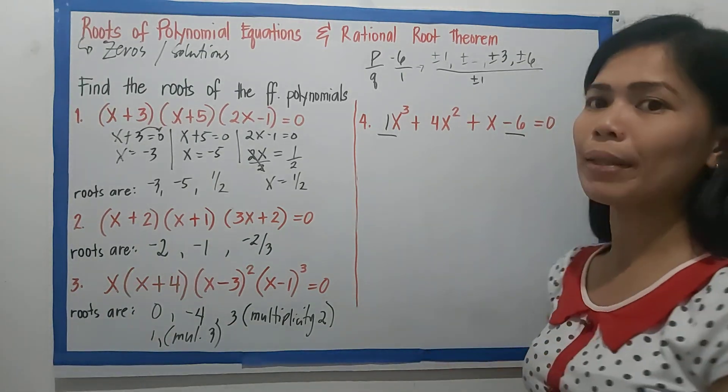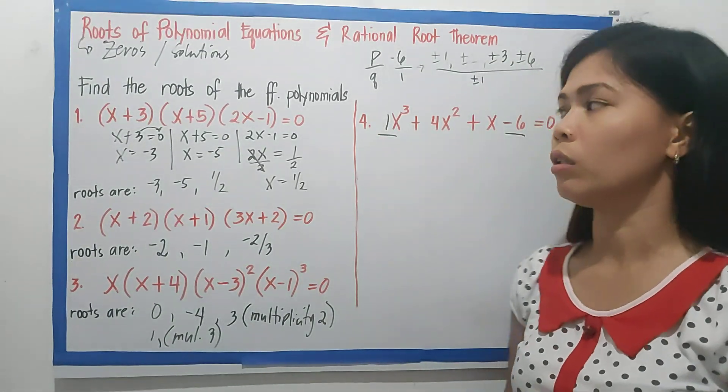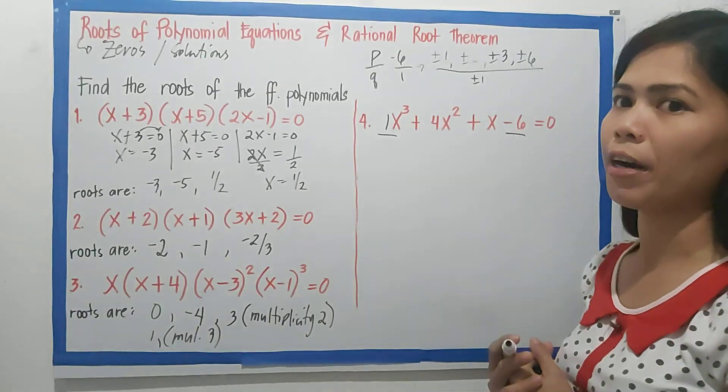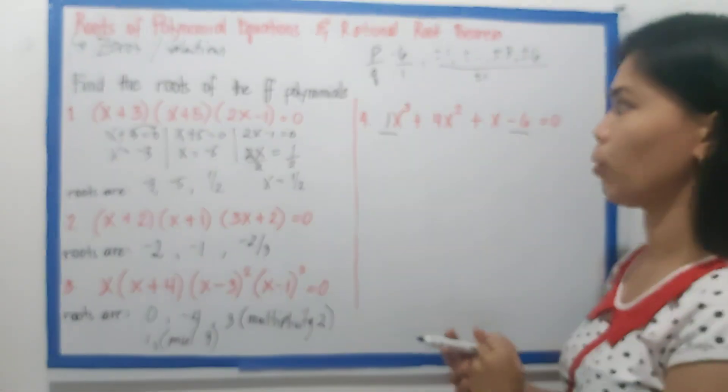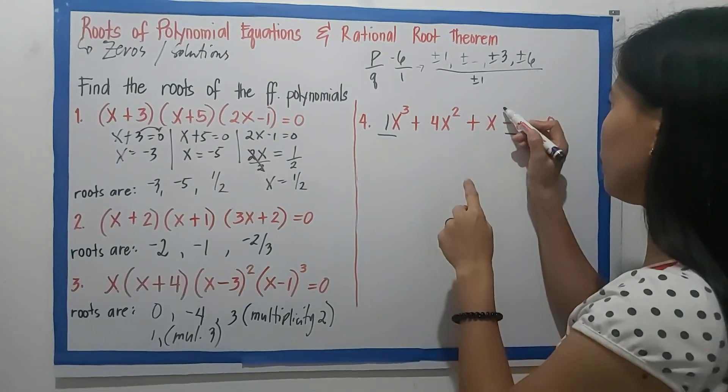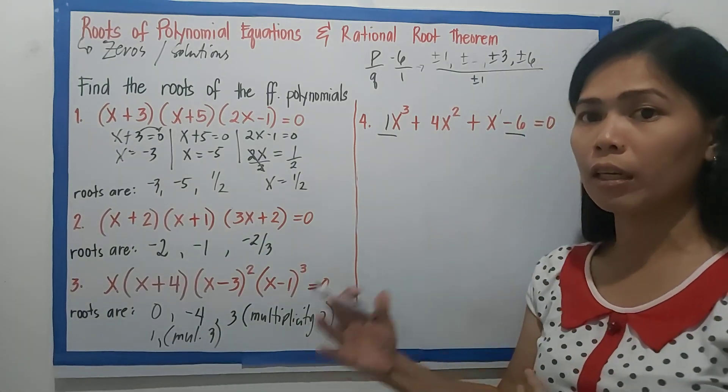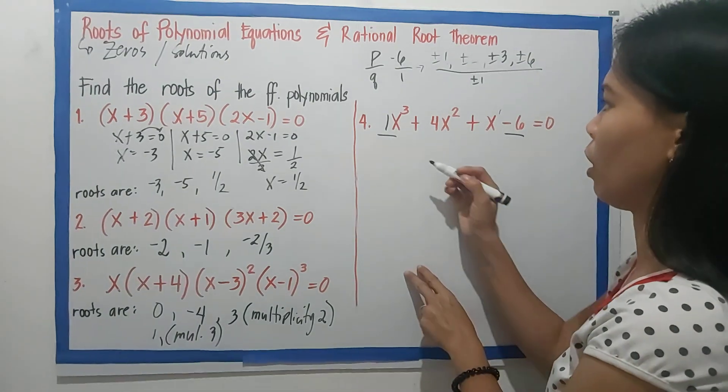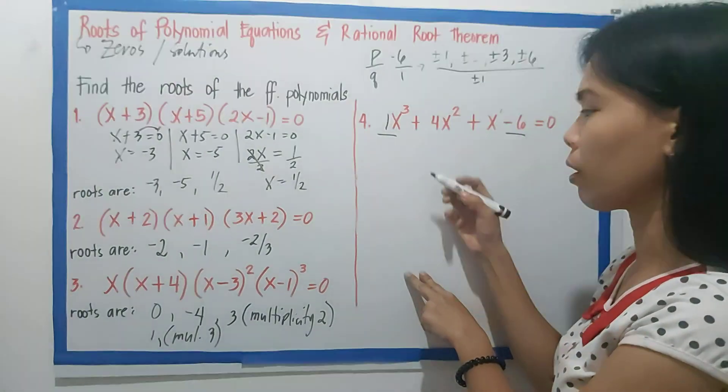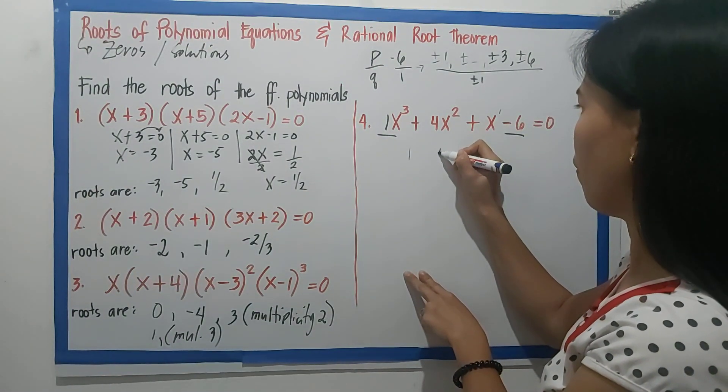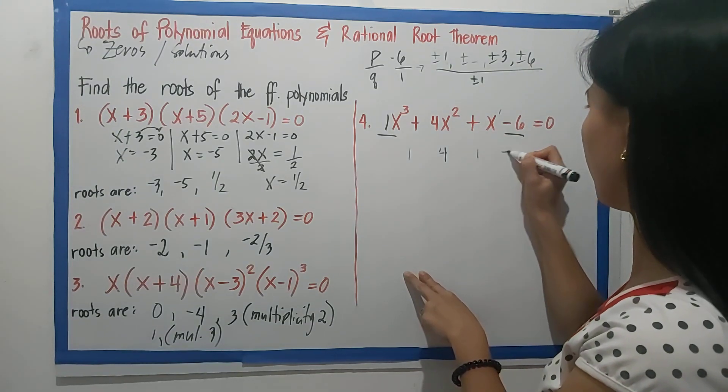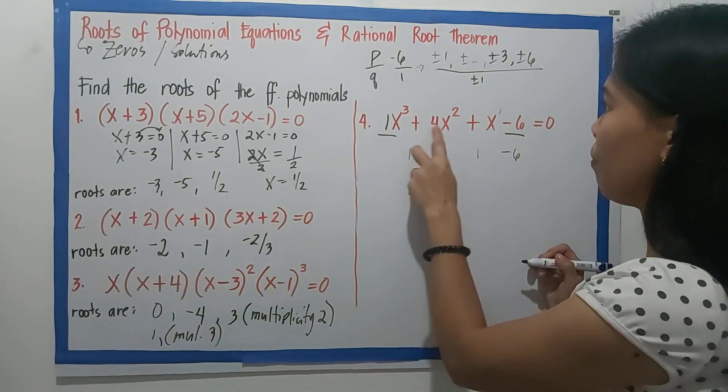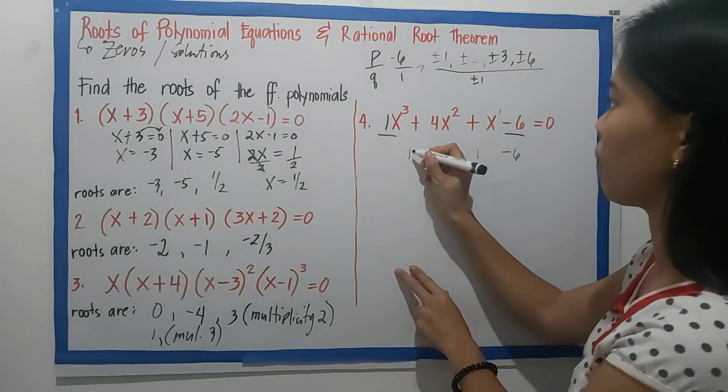We'll use synthetic division now. So let's look at our variables, our exponents. 3, 2, 1, and then constant. So perfect, complete, nothing's missing, and it's in standard form. So let's get our numerical coefficients. 1, 4, 1, -6.